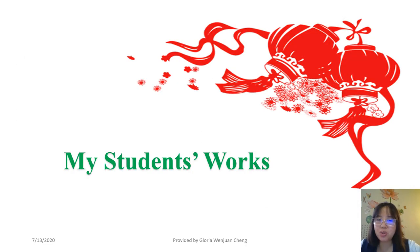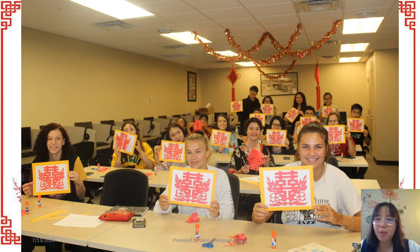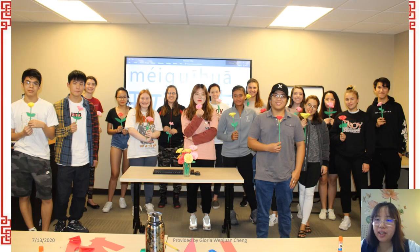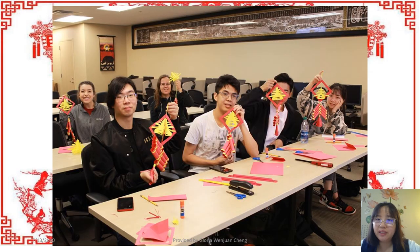Now I will show some of my students' works. 我学生的作品。The first is 双喜 — double happiness — all framed to look much prettier. The second is 龙 — the dragon. The third is 玫瑰花 — rose. The fourth is 春 — a 3D Chinese character for spring with fireworks.